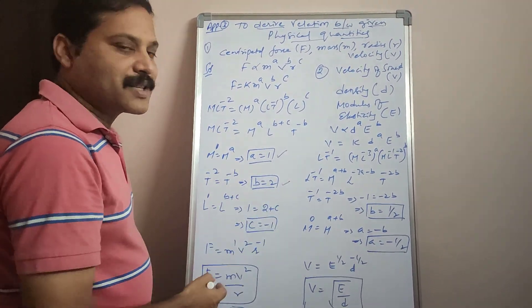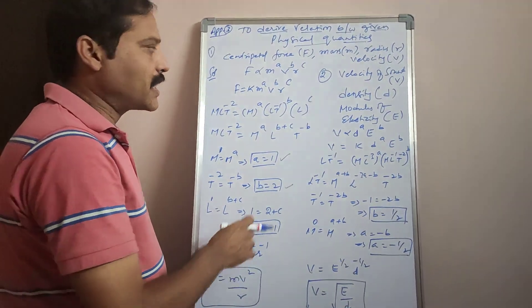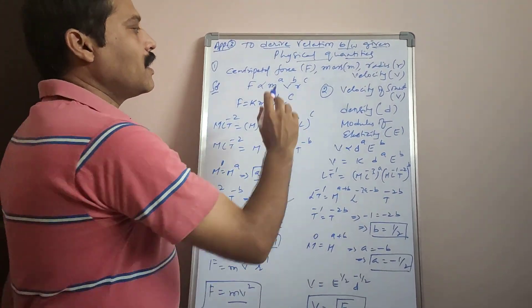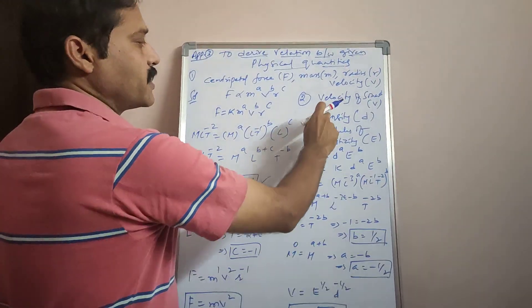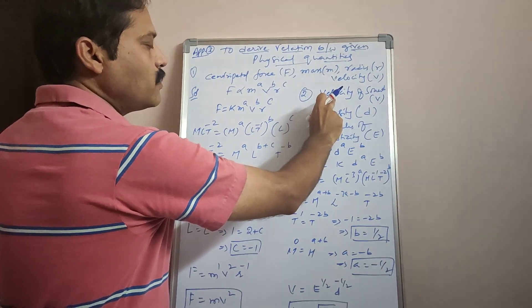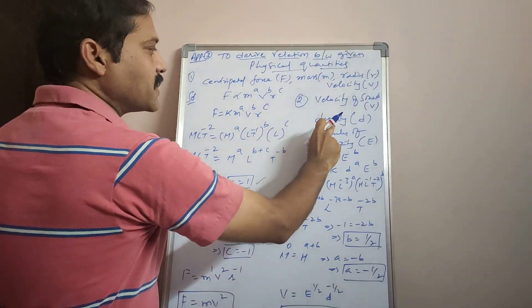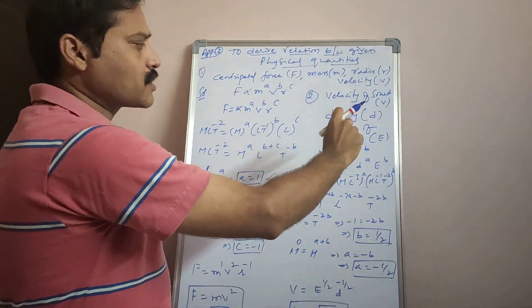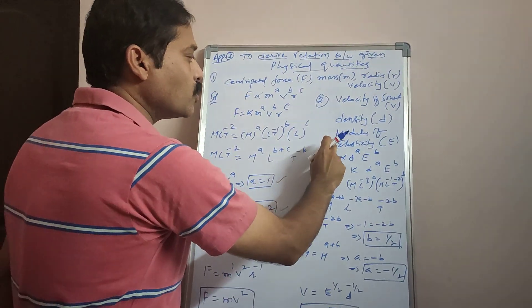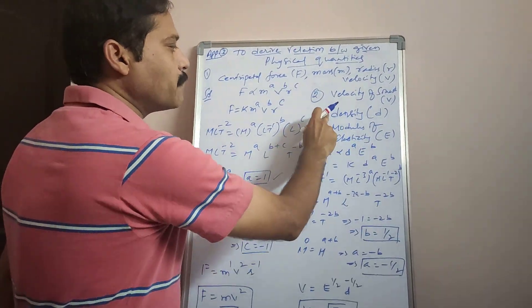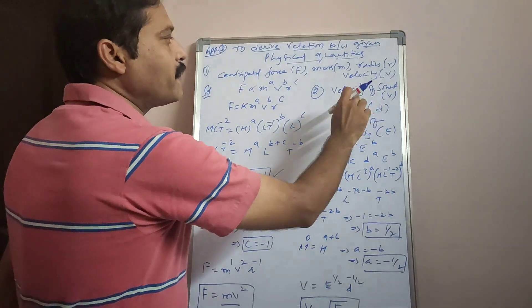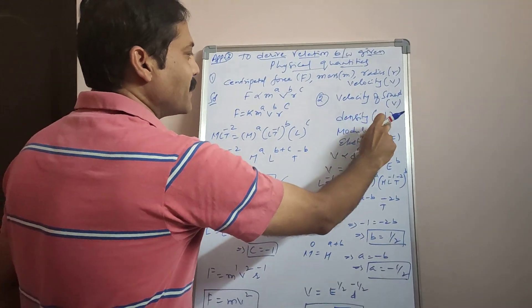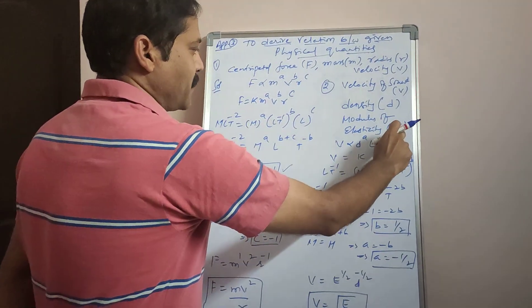Just like deriving a formula such as S = UT + ½AT², we use this dimensional method to derive relations between physical quantities. The second example: derive the relation between velocity of a sound wave V traveling in a medium of density D having modulus of elasticity E. Density and modulus of elasticity are the two parameters of a medium required for a sound wave to travel.